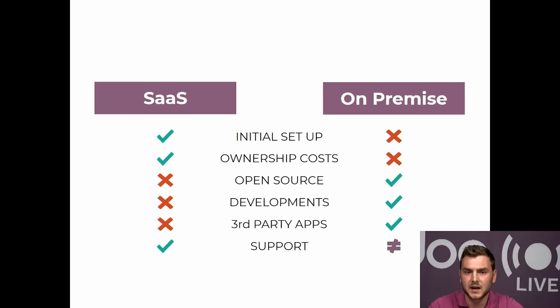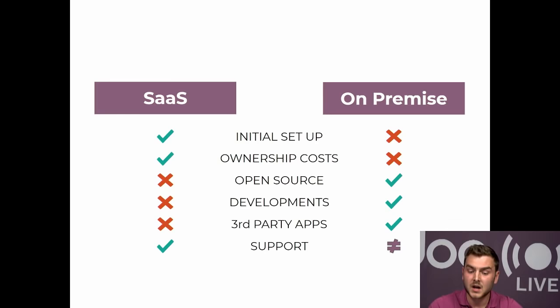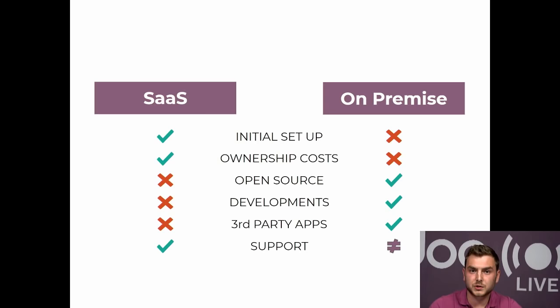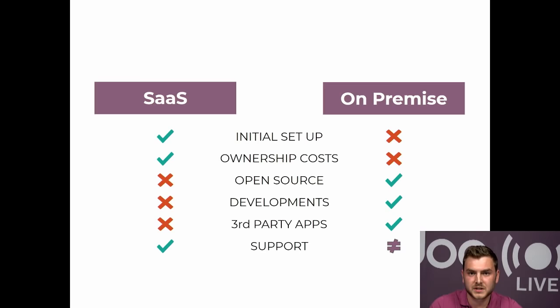The last point is support. Every Odoo Enterprise customer has support from our side — any customer can create as many functional or bug-related tickets at odoo.com/help. There is a difference though: our SaaS customers have better and faster support. For example, if your customer experiences a bug, because the solution is hosted on our servers, we can — with the customer's permission — access that database and find the problem. If your customer is hosted on-premise, we first need access to their server before investigating. So SaaS and cloud hosting support tends to be faster and smoother.